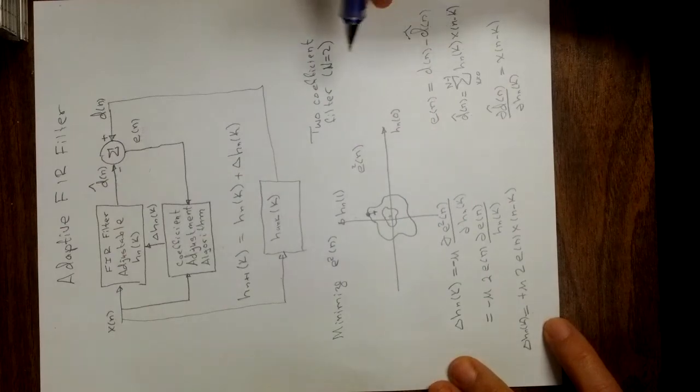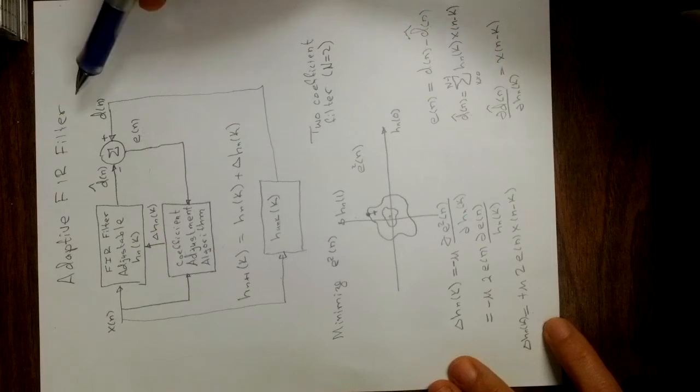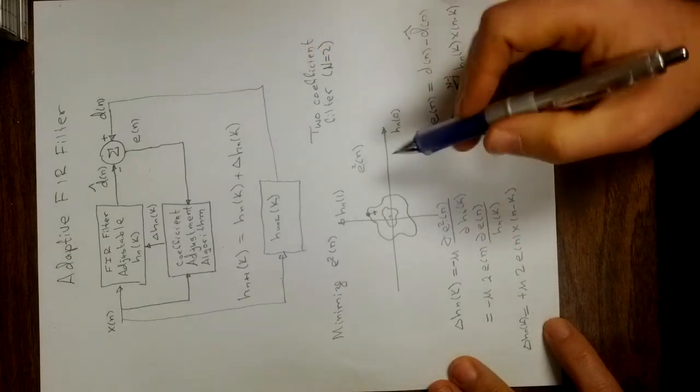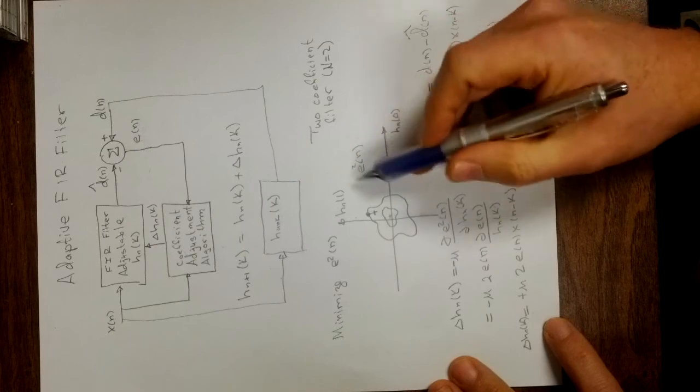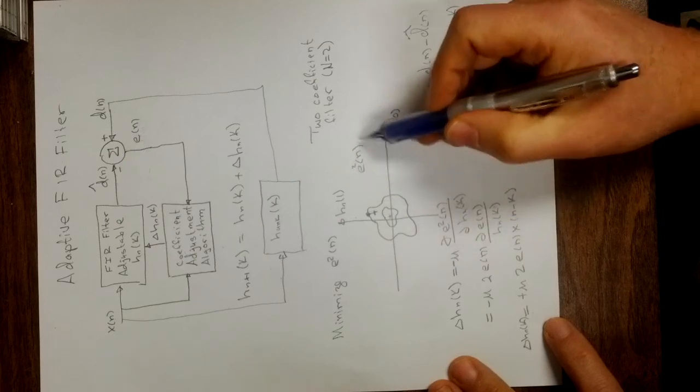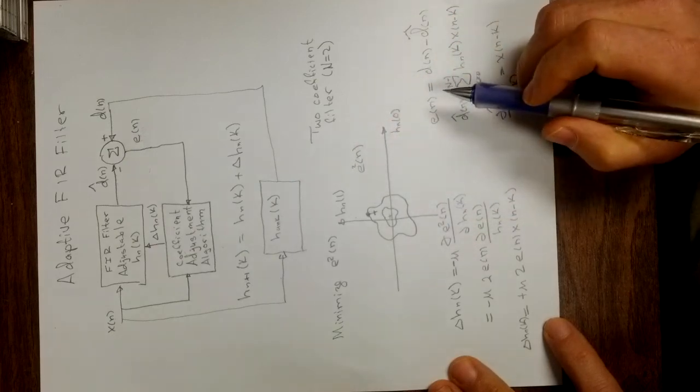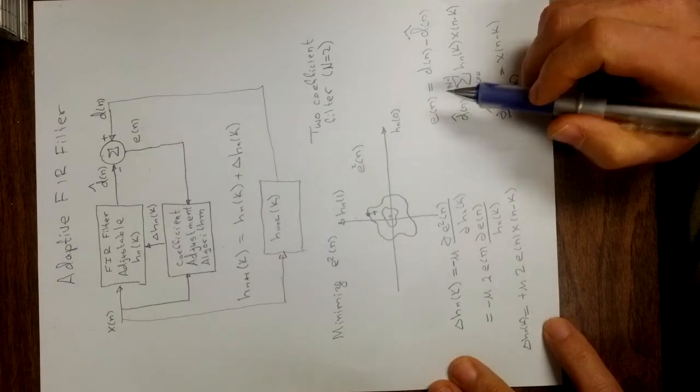So this is a very simple adaptive FIR filter. It's using the method of steepest descent, also known as, in this case, the LMS algorithm, least mean square algorithm. This e squared of n is an approximation for the mean square, and we are trying to make that least. So hopefully this helps you understand adaptive FIR filters.